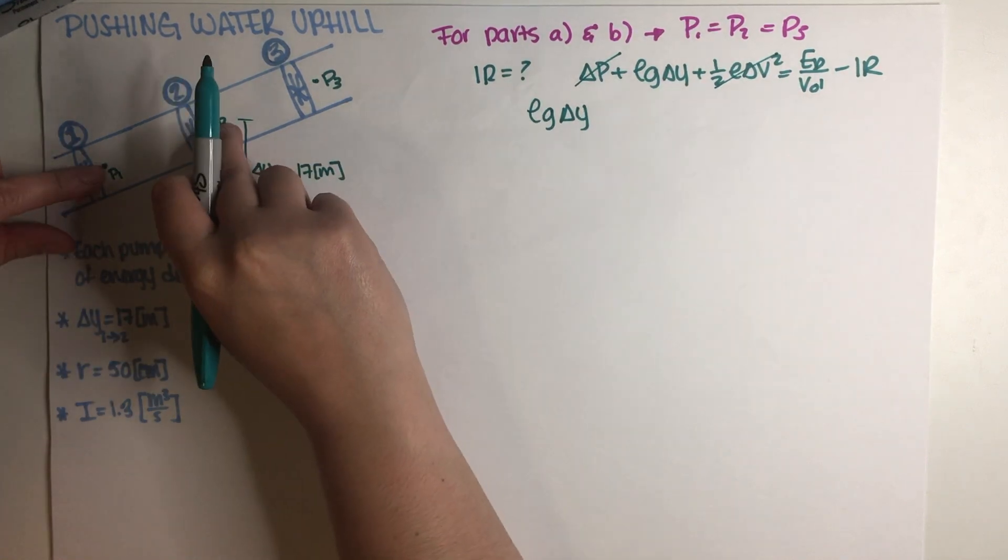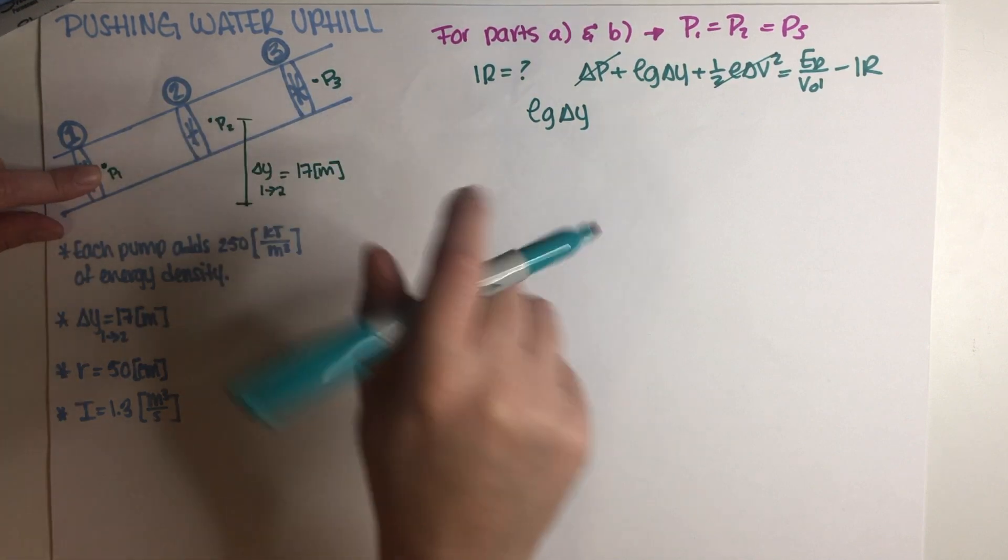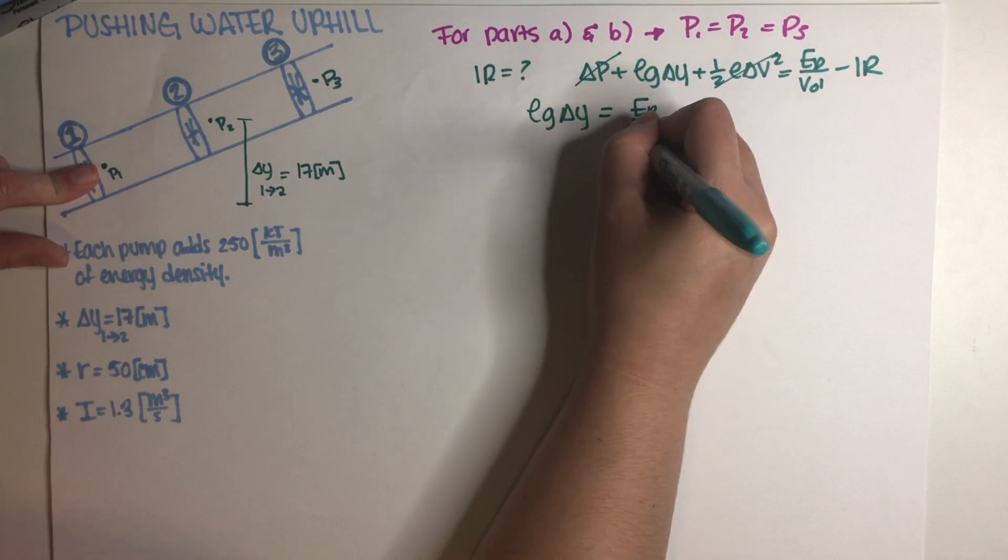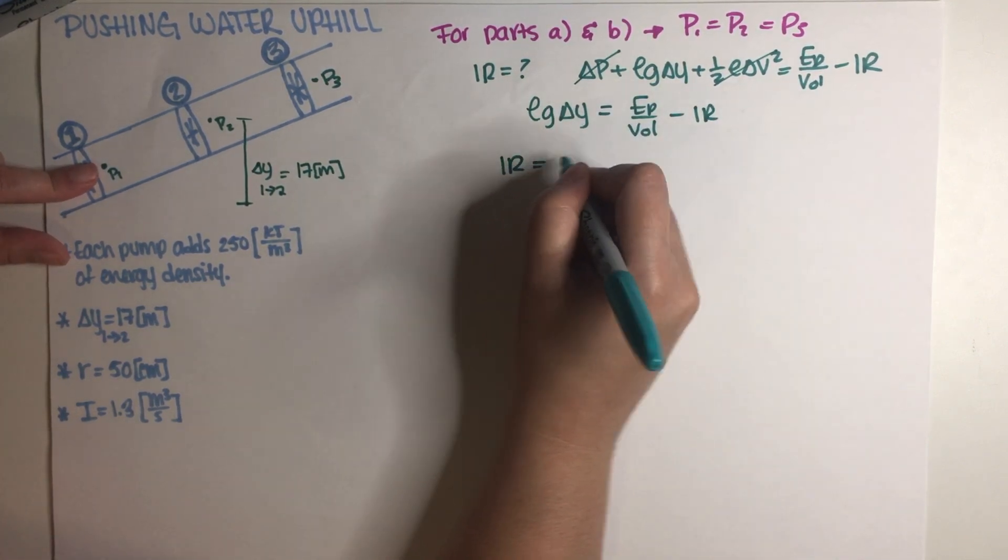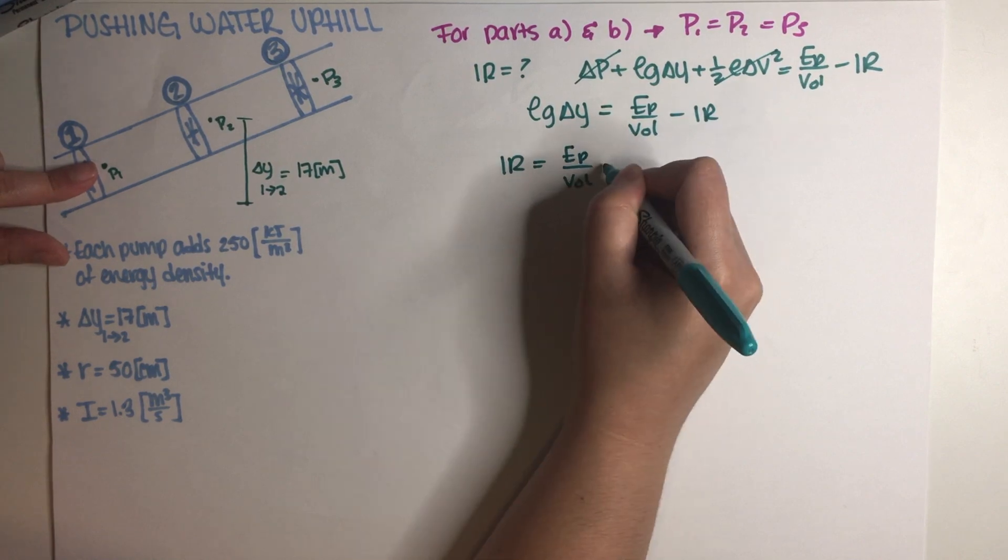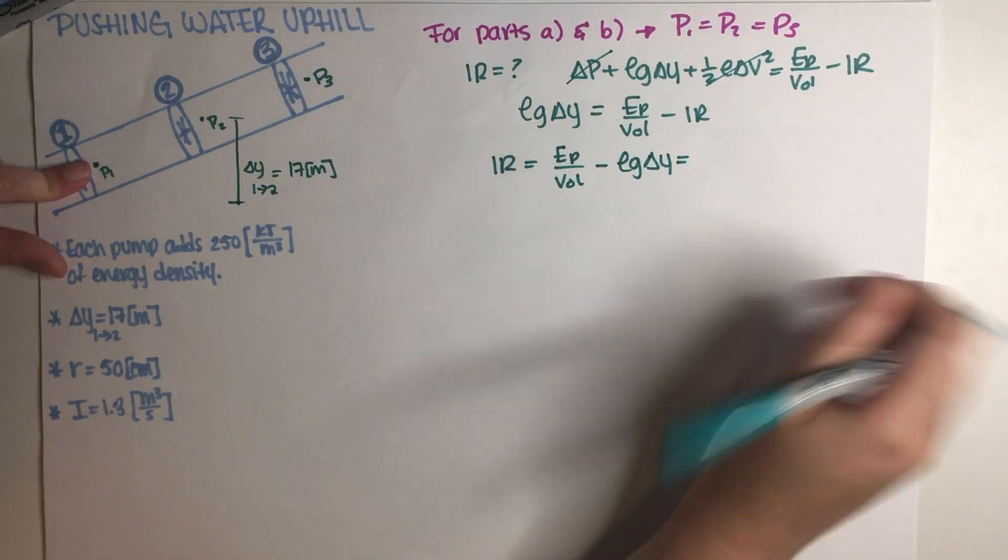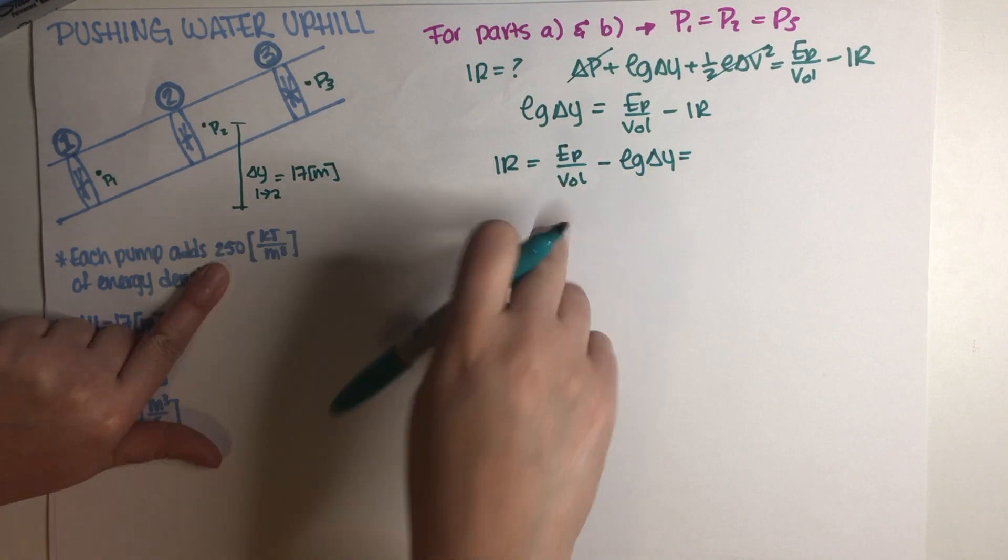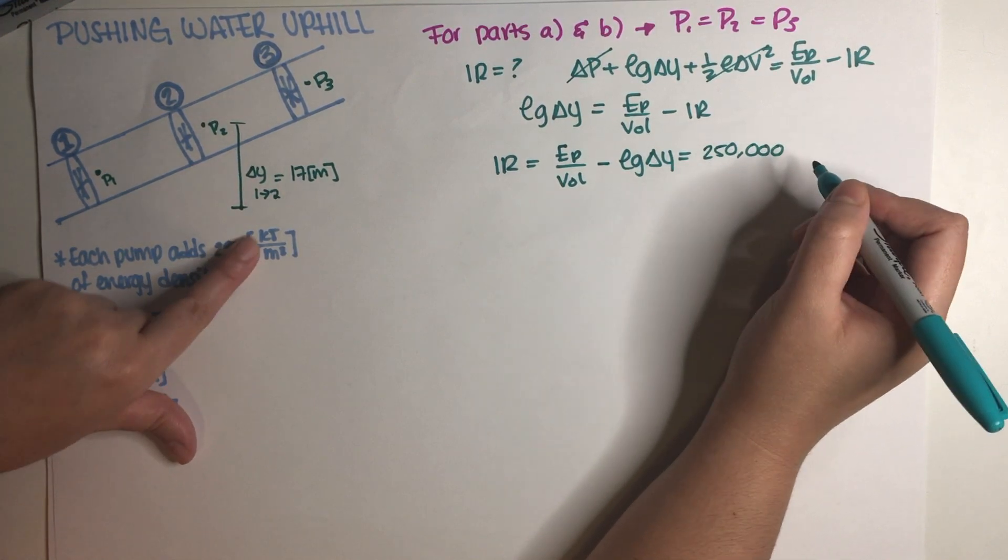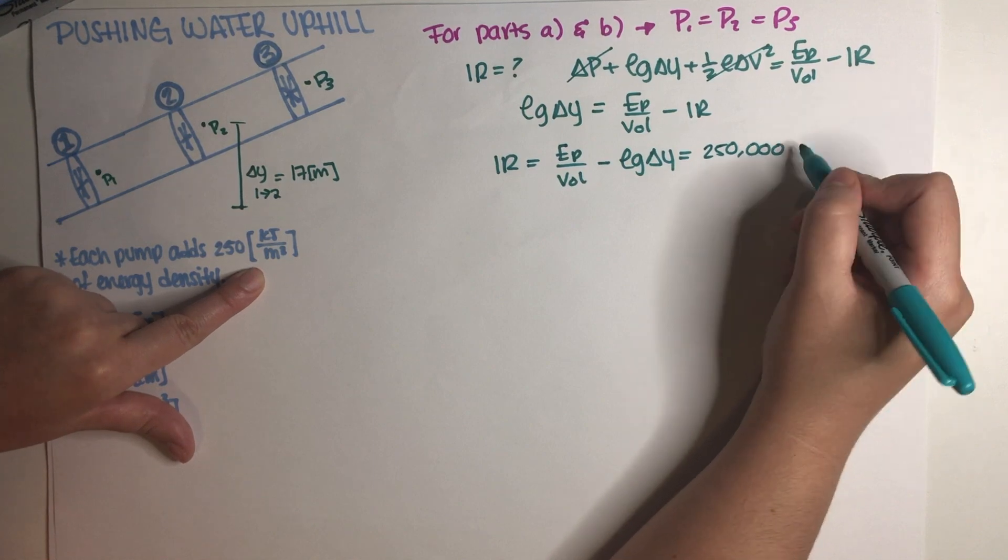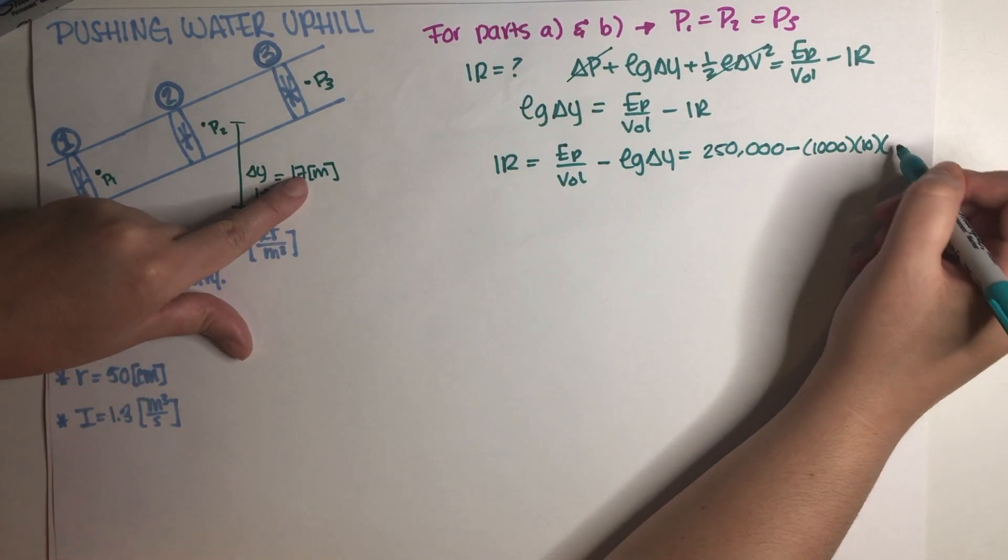And if I go from one to two, and this is why the instructions are important, I'm only crossing one of the pumps. So this is equal to E pump divided by volume negative IR. So I'm just going to go ahead and solve for IR. So IR is just going to be energy of the pump divided by volume. So this goes positive. This goes negative. So negative rho G delta Y. I'm only crossing one of the pumps. So I'm taking in 250 kilojoules. So two, five, zero, zero, zero, zero, zero in terms of SI units. And then minus, this is water, so a thousand, ten, and seventeen over here.